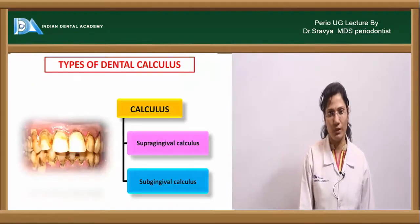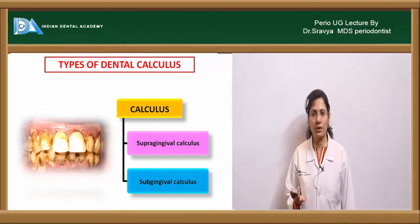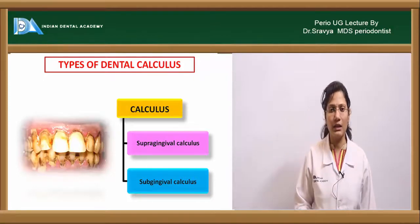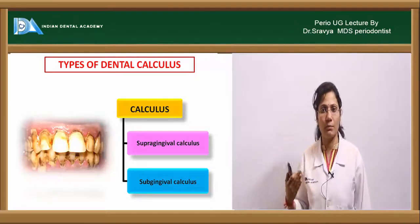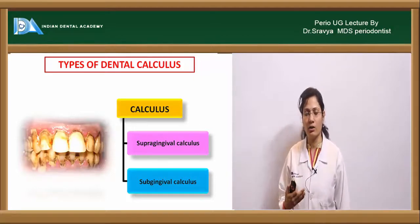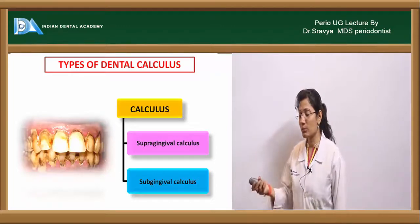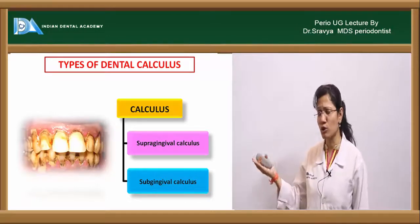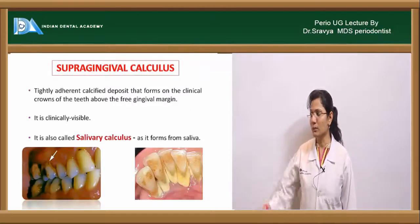Depending on the location with respect to the gingival margin, you have supragingival calculus and subgingival calculus. You can also classify calculus depending on the source: if derived from saliva, it is salivary calculus; if derived from gingival crevicular fluid (GCF), it becomes subgingival or serumal calculus. Supragingival calculus is also called salivary calculus because its source is mainly saliva.